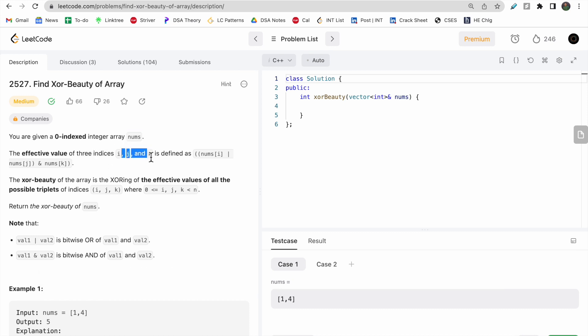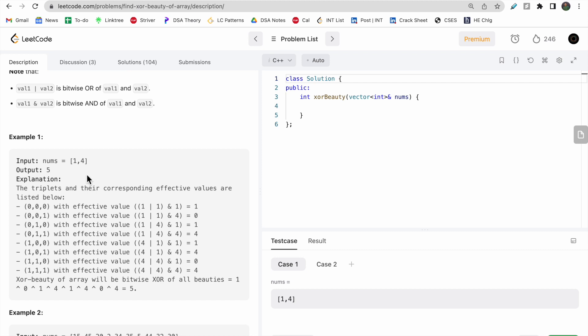You need to take three indices i, j, and k in the range 0 to n as triplets. The beauty is defined as (nums[i] OR nums[j]) AND nums[k]. Finally, you need to find the XOR of all possible beauties from these triplets in the nums array.